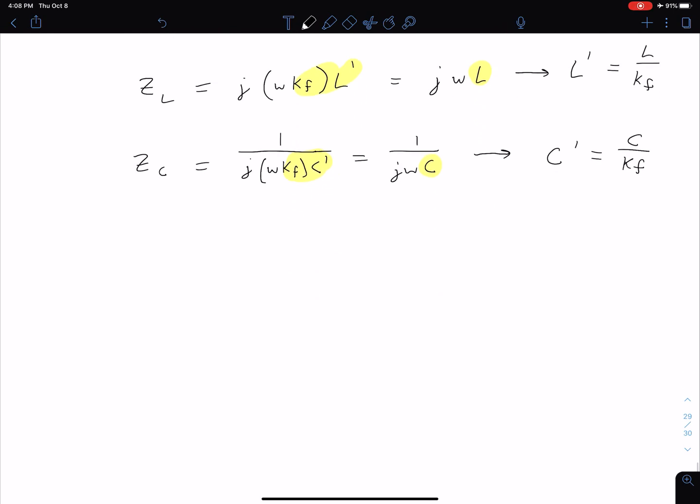For frequency scaling, we can summarize our four values like we did with magnitude scaling. R' equals R, so there's no change in resistance. L' equals L divided by kf. C' equals C divided by kf. And our new frequency omega' equals kf times our original frequency. By design, we've scaled the frequency.